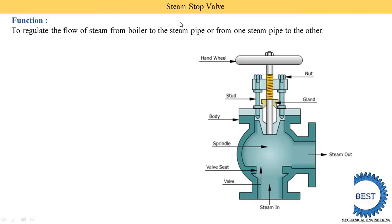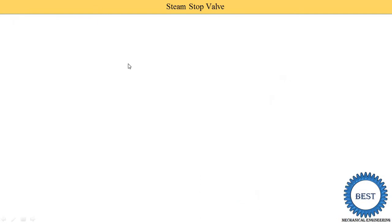The steam stop valve is installed at the outlet of the steam, which is the top part of the boiler shell. It is used to regulate the flow of steam from the boiler to the steam pipe. Steam collected in the boiler is supplied whenever required, and the quantity of steam supplied is decided using this steam stop valve.